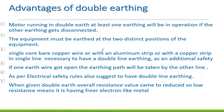The advantage of double earthing is that even if one earth connection gets disconnected, at least one earth will remain in operation. The two earth connections are placed at distinct positions on the equipment so they act in parallel, which helps increase electron flow and reduce total resistance in the earth path.